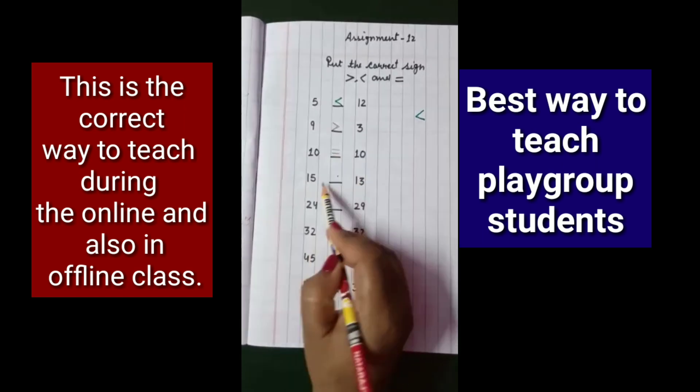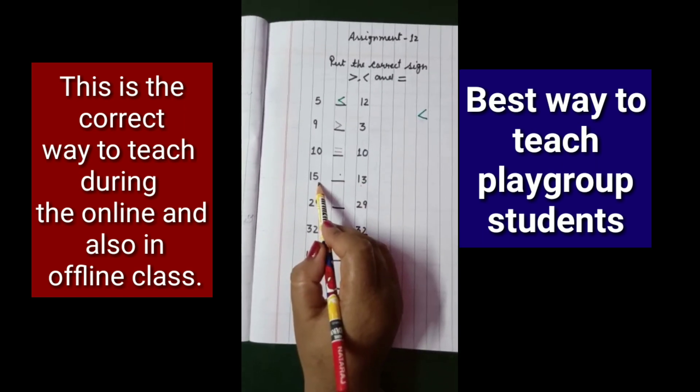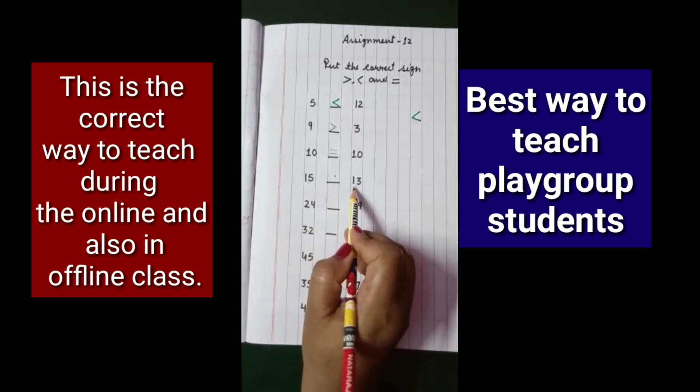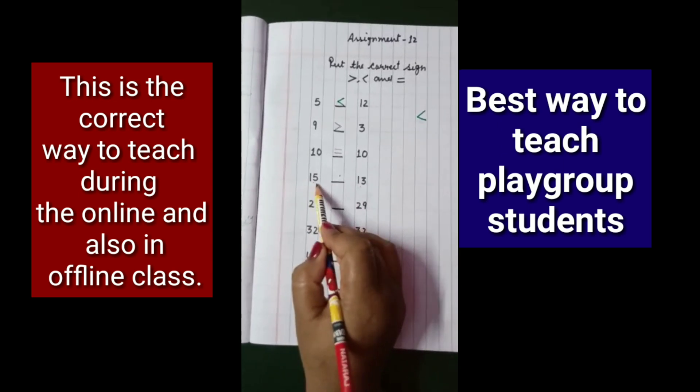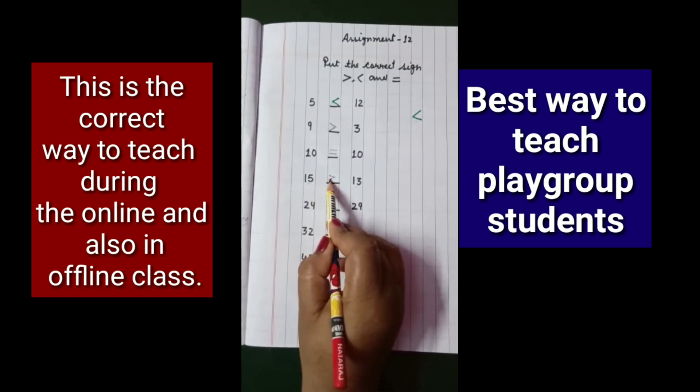The next one is 15 and 13. Which is the bigger one? 15, and the smaller one is 13. So where does the mouth face? 15, because it is the greater one.